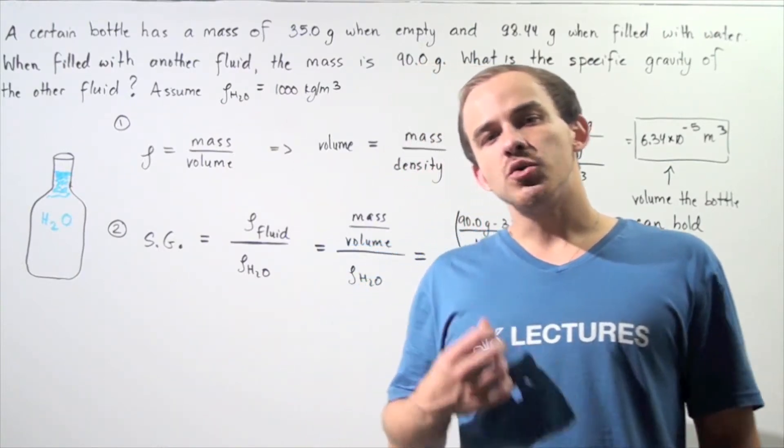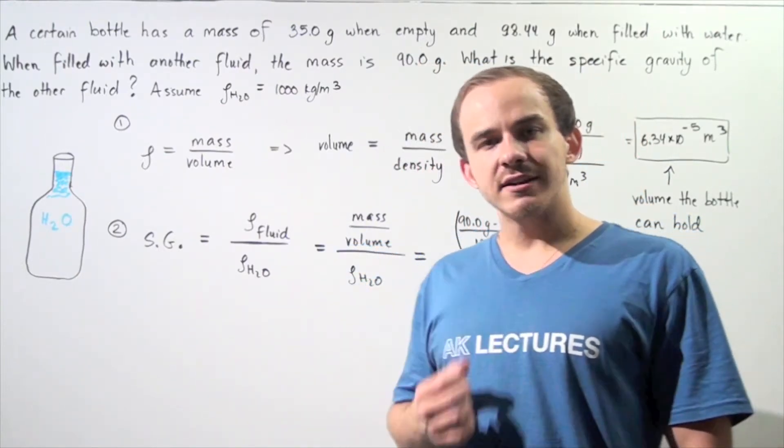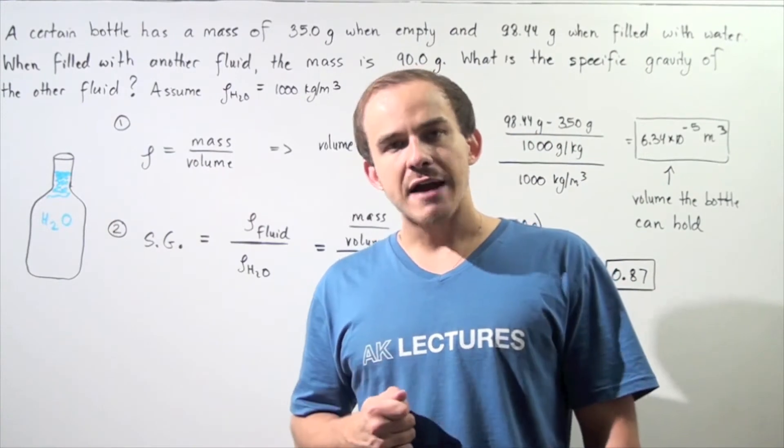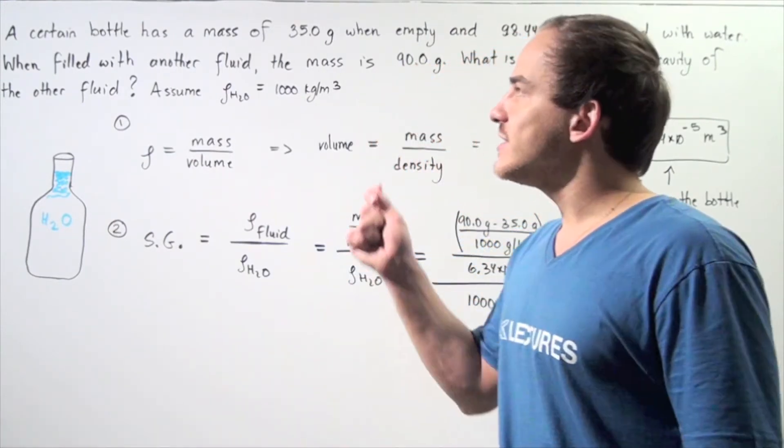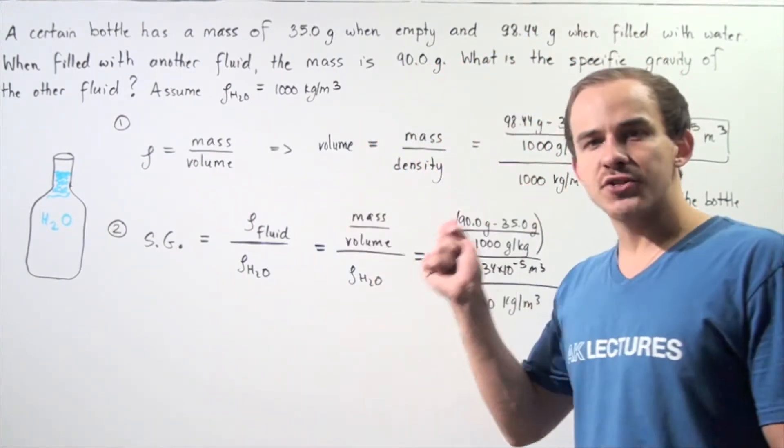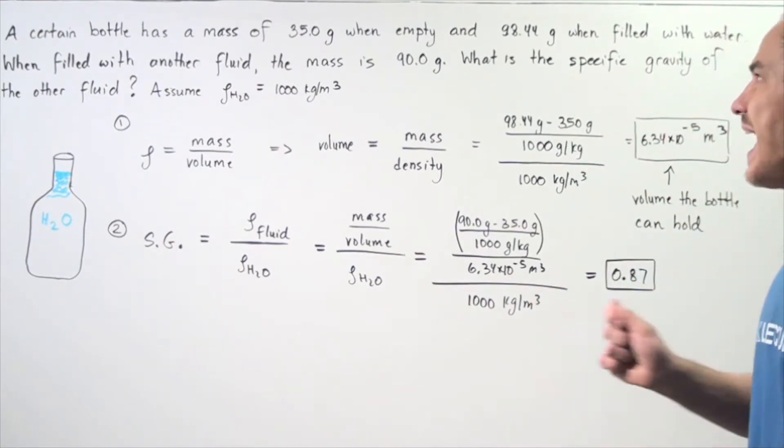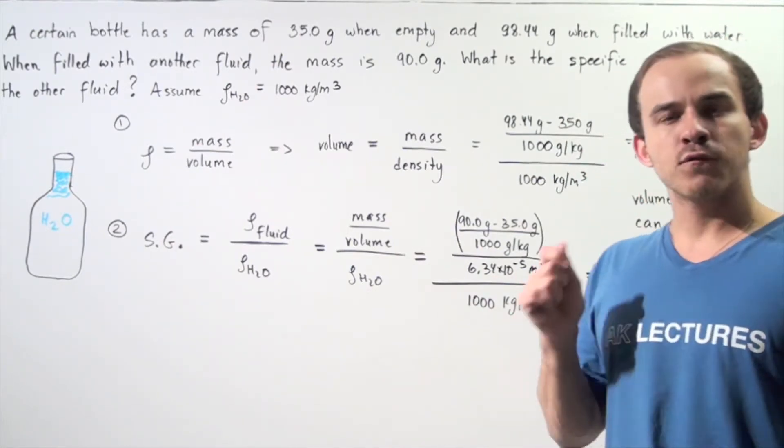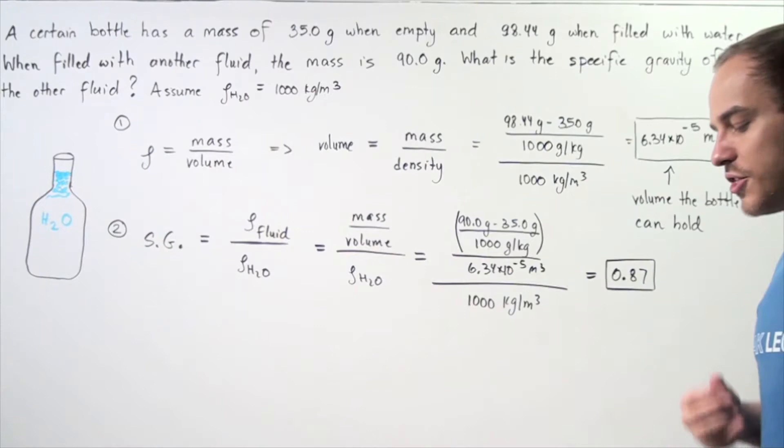In this example, we're going to concern ourselves with calculating the specific gravity. Let's suppose that a certain bottle has a mass of 35 grams when empty and 98.44 grams when filled with water.